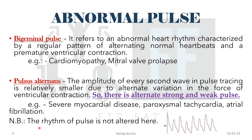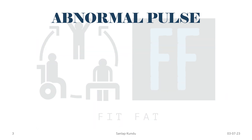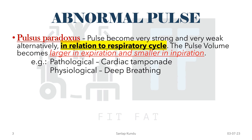Please note that the rhythm of the pulse is not altered in pulsus alternans. The third abnormal pulse is pulsus paradoxus. It is very important because in this pulse becomes very strong and very weak alternately in relation to the respiratory cycle.